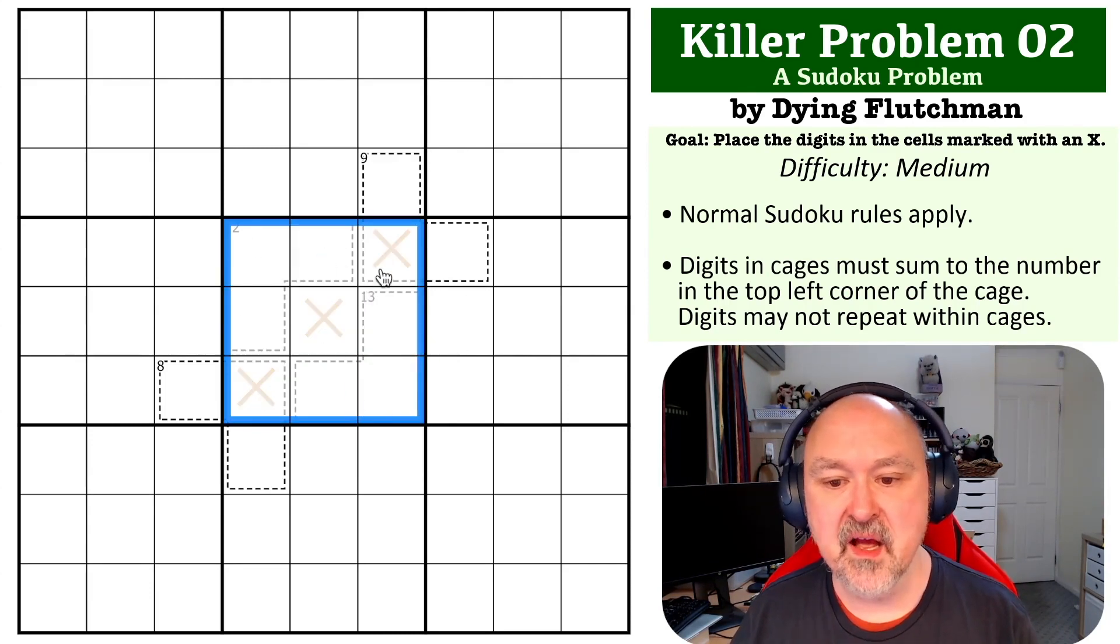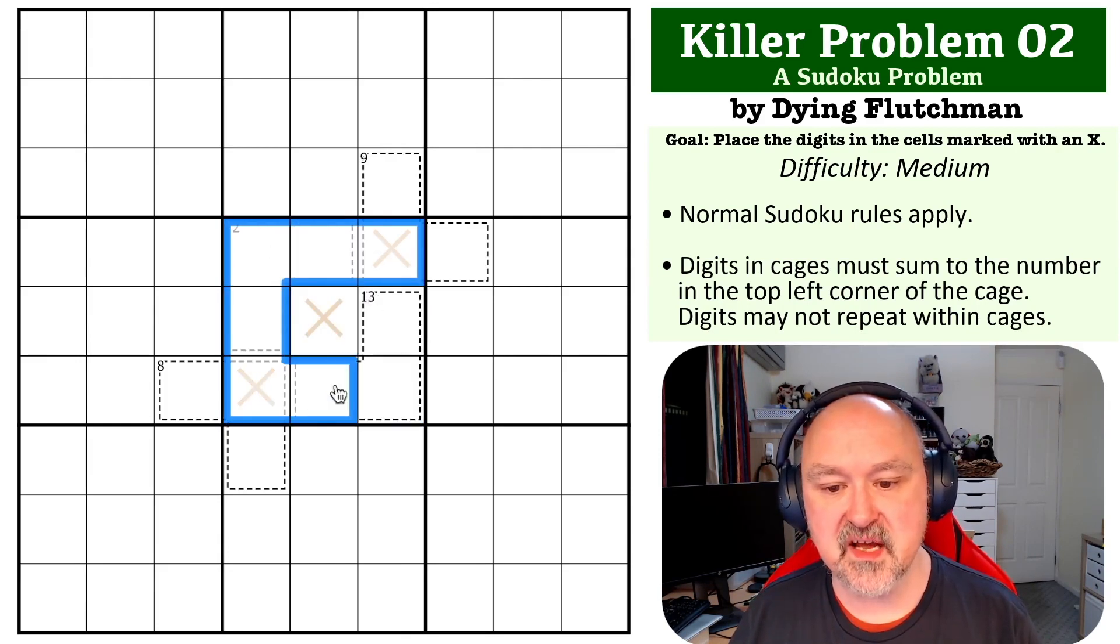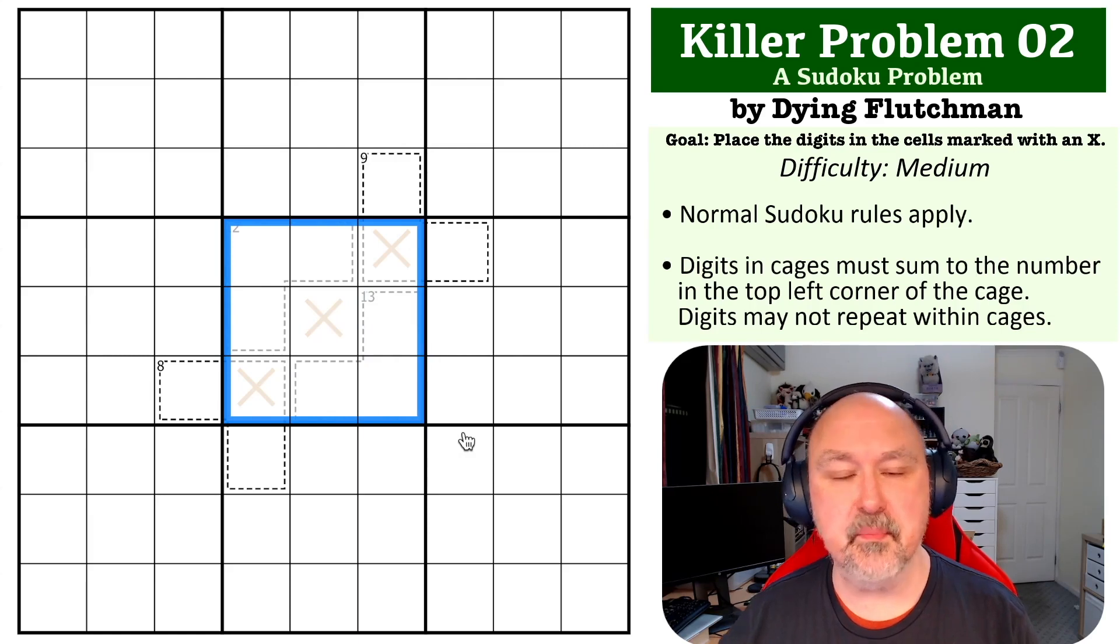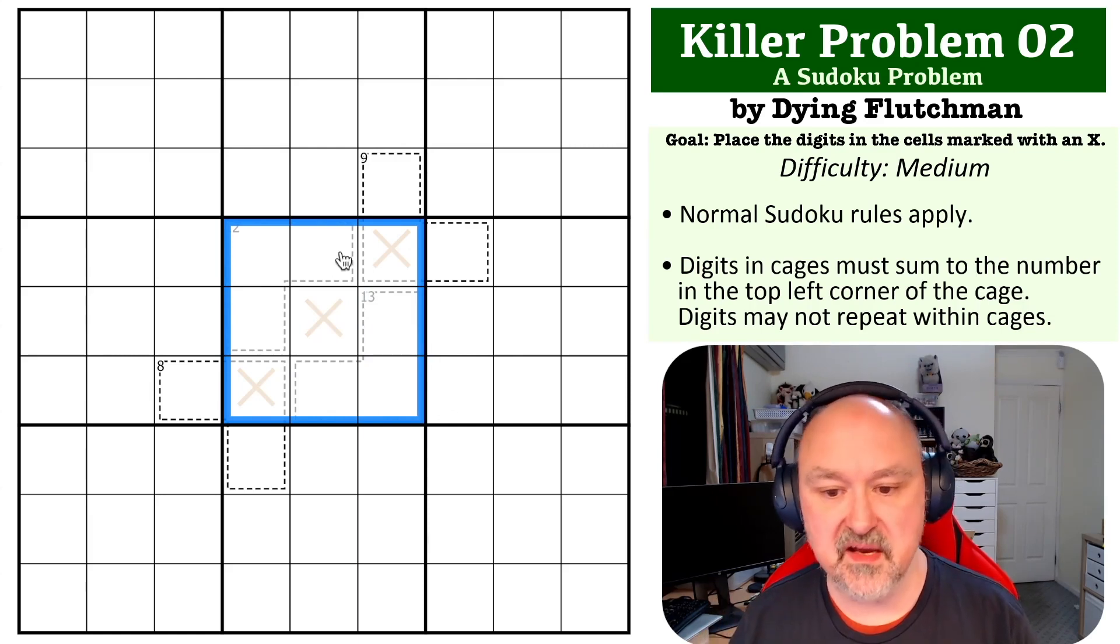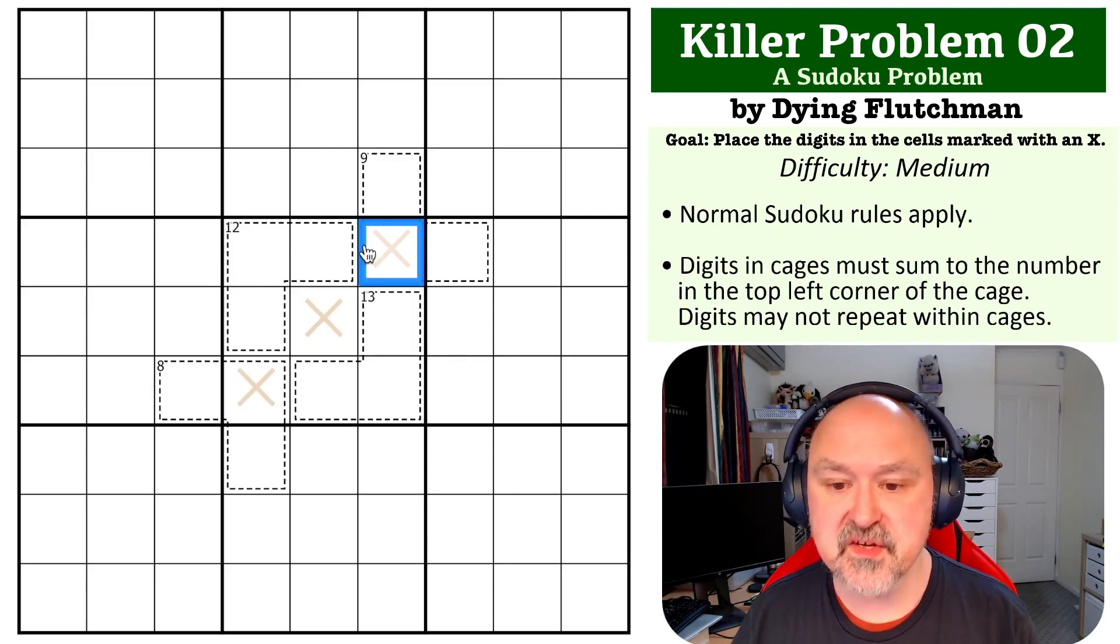So if you were to take all of the digits that are placed in this box at the inner Sudoku grid, it'll be all of the digits from one to nine. So we know that in the final grid, if we ever got that far, box five would have to contain those digits which will sum to 45.